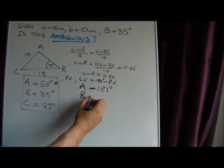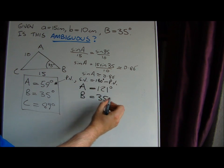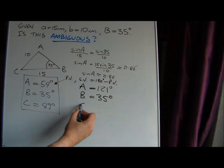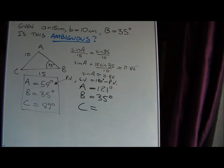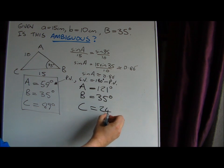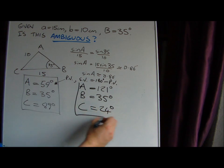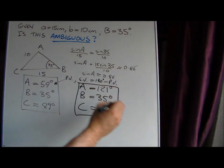Since we're given angle B as 35 degrees, can we calculate another angle for C? Well, the angle sum of a triangle must be 180. So if we subtract these two from 180, we're left with C is 24 degrees. So this is another set of solutions which satisfy this information.